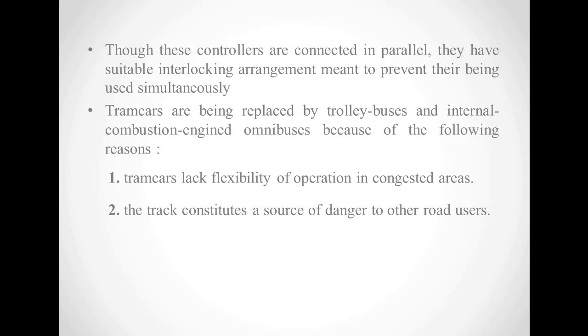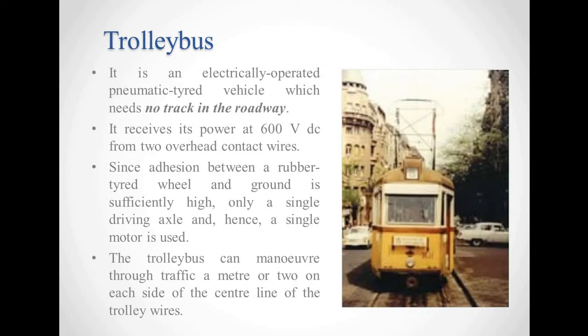A trolley bus is an electrically operated pneumatic tire wheeled vehicle which needs no track in the roadways. As you can see in the picture, it receives power of 600 volt DC from two overhead contact wires. Since the adhesion between rubber-tired wheels and ground is sufficiently high, it needs only a single driving axle and hence a single motor is used. The trolley bus can manoeuvre through traffic at a meter or two from each side of the central line of the trolley wires.